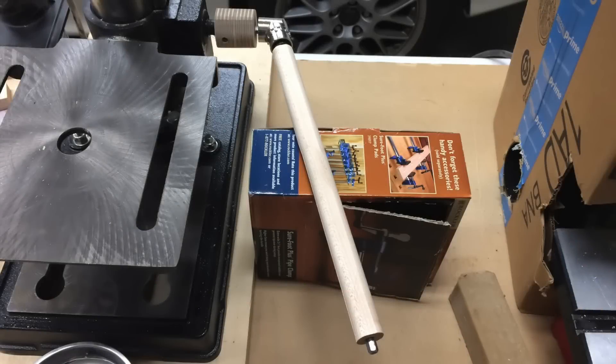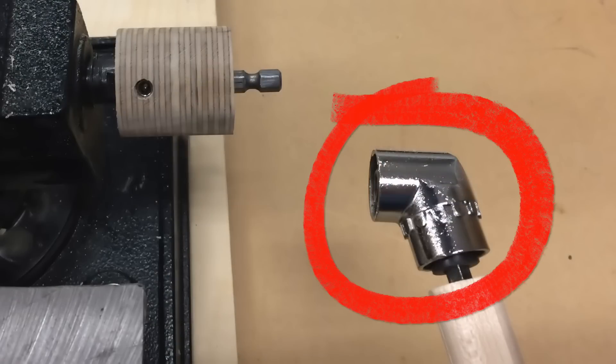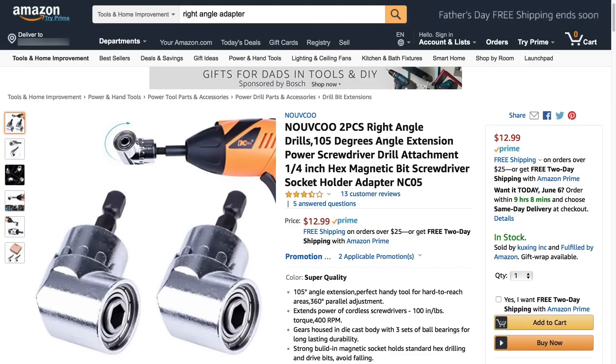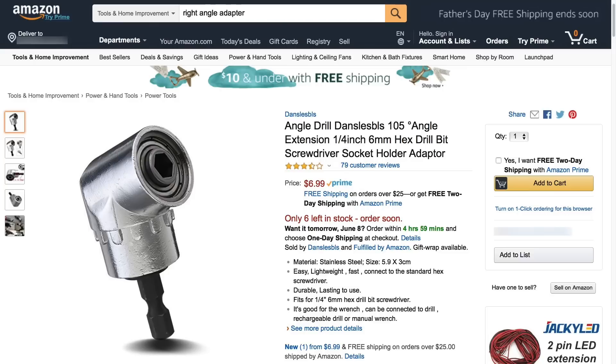The heart of this articulated crankshaft is this right angle adapter thingy I got from Amazon. I bought this in a package of two for $13 because I thought I might need a second one. You can buy one for $7. Links are in the description below.